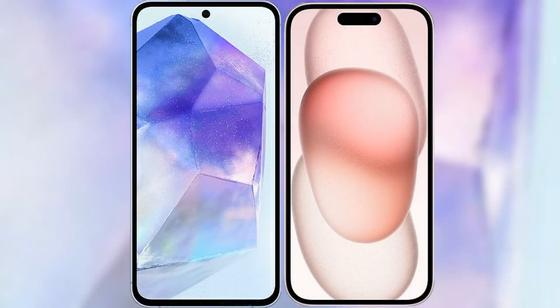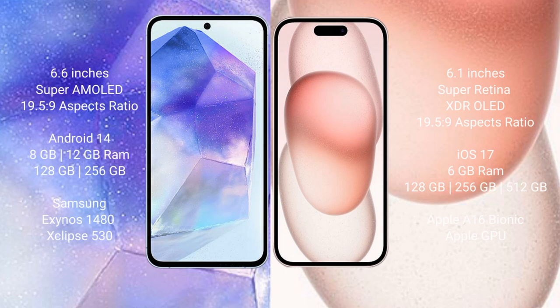I will compare the new Samsung Galaxy A55 with iPhone 15. Samsung Galaxy A55 comes with a 6.6-inch Super AMOLED display, while iPhone 15 comes with a 6.1-inch Super Retina XDR OLED display. Samsung Galaxy A55 runs on the Android 14 operating system, and iPhone 15 runs on the iOS 17 operating system.